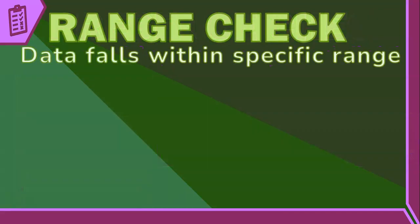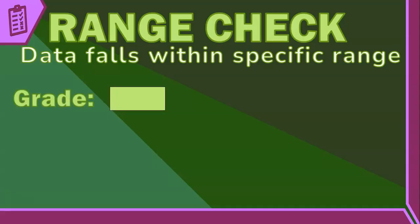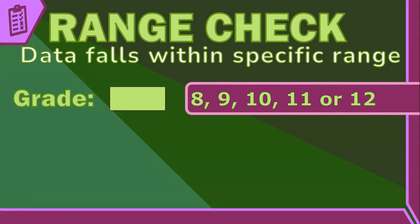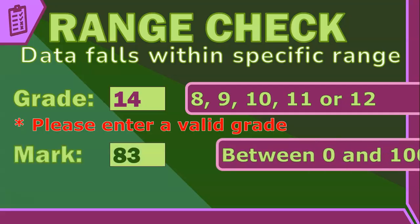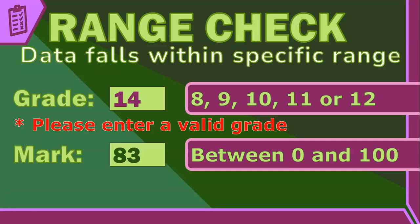A range check ensures that the data falls within a specific range. For example, if a high school system is recording your grade, a range check might ensure the number entered is between 8 and 12. If you accidentally type a 14, the system should flag it as not possible. This can also apply to an exam mark that must be between 0 and 100, or a multiple choice answer that can only be A, B, C, or D.